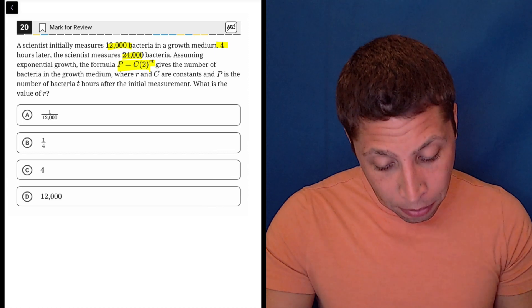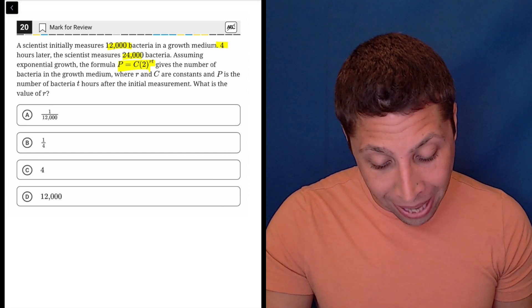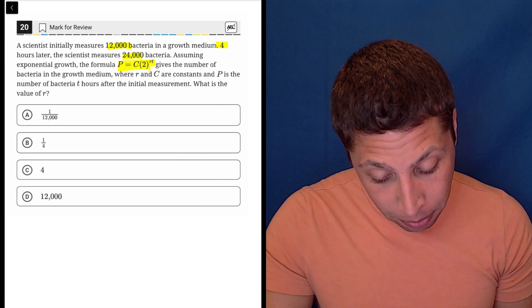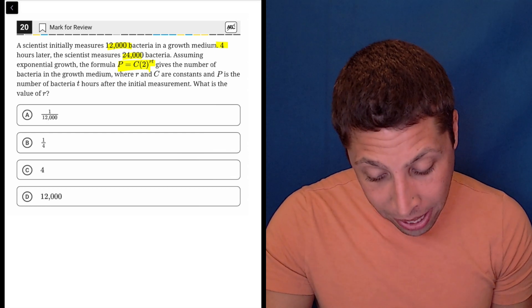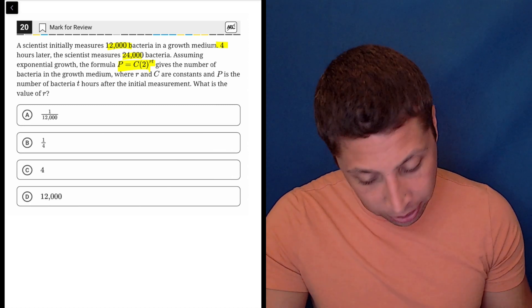In a way, they're telling us how this is going to work. There's 24,000 bacteria, where R and C are constant, and P is the number of bacteria after the initial measurement. Actually, they're just telling it to us.